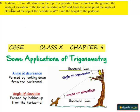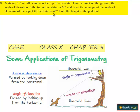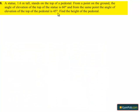Moving on to the 8th question: a statue 1.6 meters tall stands on the top of a pedestal. From a point on the ground, the angle of elevation of the top of the statue is 60 degrees, and from the same point, the angle of elevation of the top of the pedestal is 45 degrees. Find the height of the pedestal.